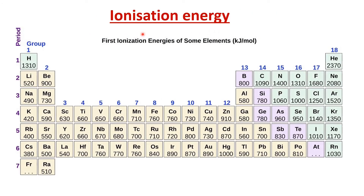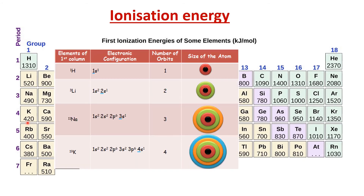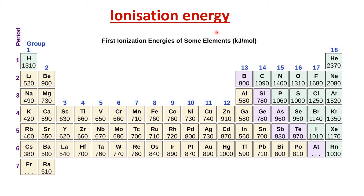The second property is ionization energy — the energy required to remove the outermost electron from an atom. Looking at the periodic table with ionization energy values, going down the first group the values decrease. As we move down the group, atomic size increases, the attraction between nucleus and outermost electrons decreases, and it becomes easier to remove an electron. So ionization energy decreases going down a group.